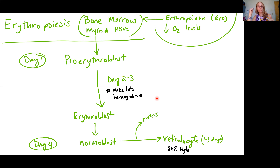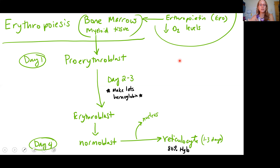On day four, the erythroblast is called a normoblast, and at this point it ejects the nucleus and other organelles. Most hemoglobin must be produced before becoming a normoblast, because then the cell loses the DNA instructions and eventually the machinery to make more hemoglobin. After the nucleus is kicked out, the cell is called a reticulocyte — it has about 80% of the hemoglobin it needs but still has mRNA to make additional hemoglobin for a few more days.